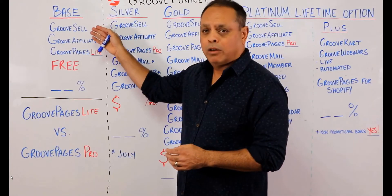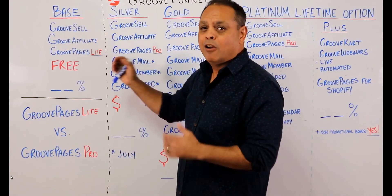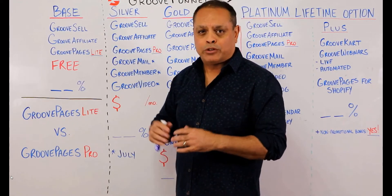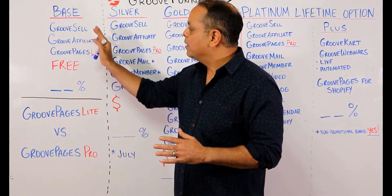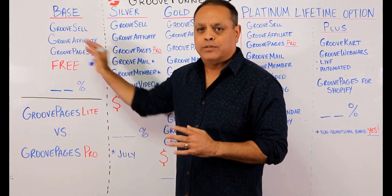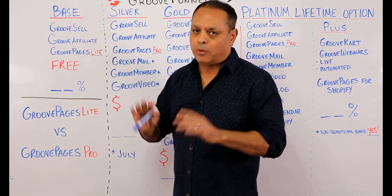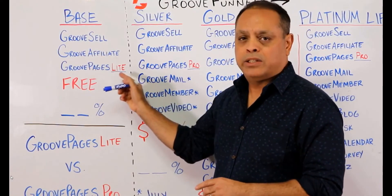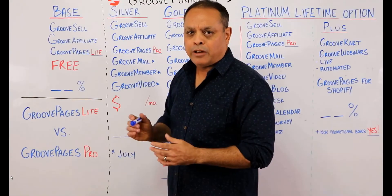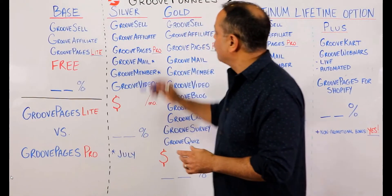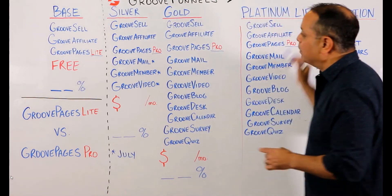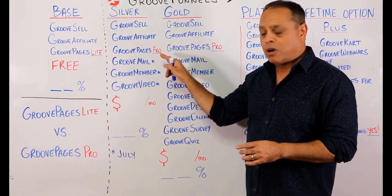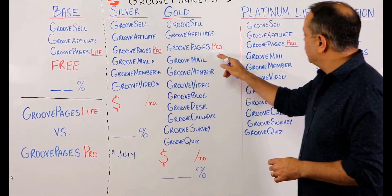With the base plan, you get all of GrooveSell, all of GrooveAffiliate, all future updates — everything. There will never be anything we do to GrooveSell or GrooveAffiliate that will ever ask you for a credit card. You'll also get GroovePages Lite. In the other plans — silver, gold, and platinum — you'll see GroovePages Pro listed. So let me talk about the difference between GroovePages Lite and GroovePages Pro.